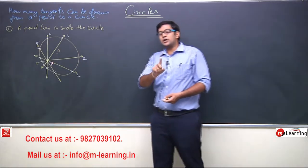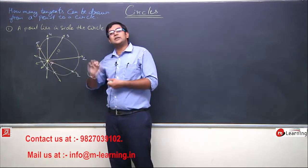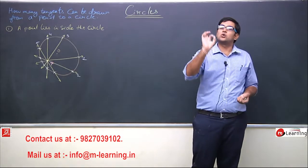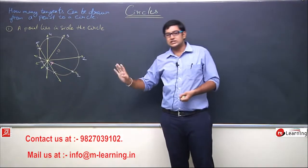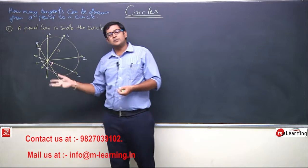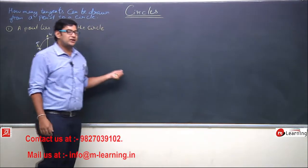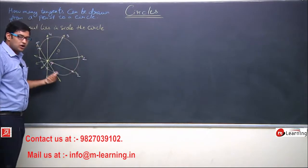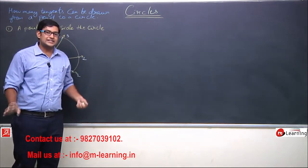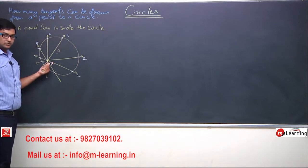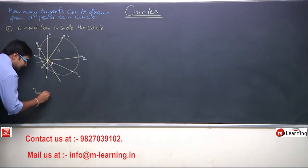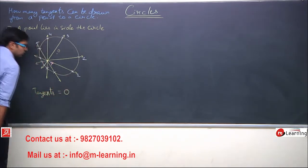Tangent kehta hai sirf ek point pe touch hona chahiye. Lekin is P point se aap kitni bhi lines draw kar lo, har line do points pe circle ko touch karegi. So in this case, if a point lies inside the circle, can I draw a tangent from this point? No, I cannot draw any tangent from this point. Number of tangents will be zero — no tangent possible.